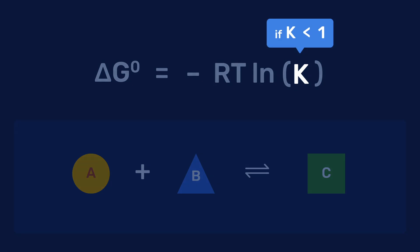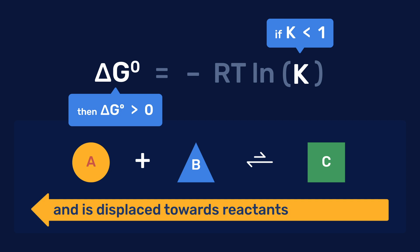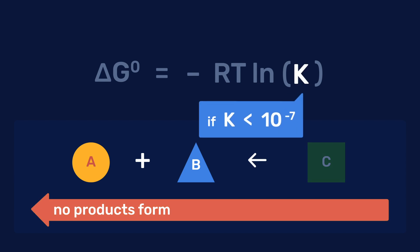Conversely, if K is smaller than 1, then ΔG0 is positive, which tells us that the reaction is not spontaneous in the forward direction and that it is displaced towards the reactants. One generally considers that no products form if K is smaller than 10 to the power minus 7.